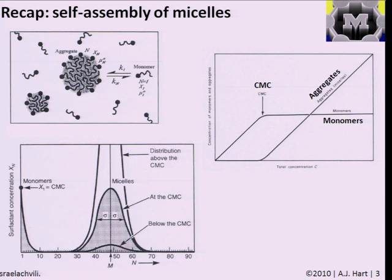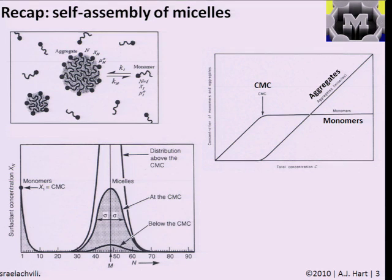Going through the basic thermodynamics and considering how the aggregation energy or average chemical potential varied with the size of the aggregate, we saw that in cases where there is a specific preferred size due to those interactions — and also due to other effects such as how molecules pack together and their flexibility — in some cases there is a preferred aggregation about a particular mean size. We concluded by talking about the idea of a critical concentration above which you favorably form aggregates of this desired size.